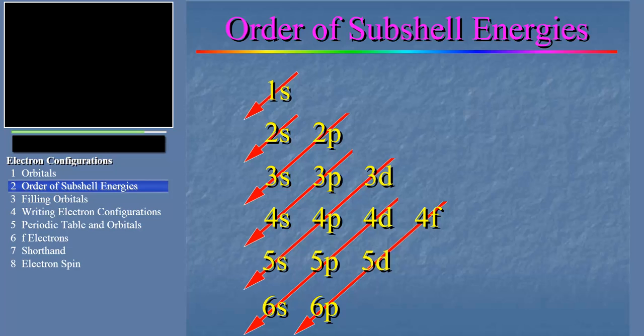You see the order is 1s, 2s, 2p, 3s, 3p, 4s, 3d, 4p, 5s, 4d, 5p, 6s, 4f, and that's probably about as far as we need to go for now.